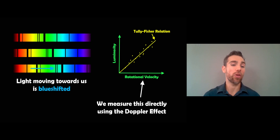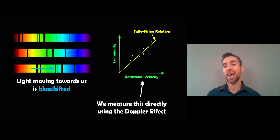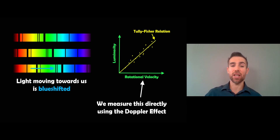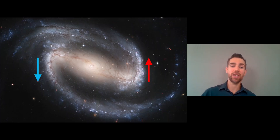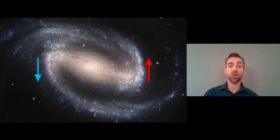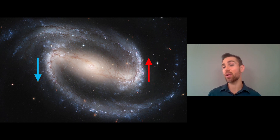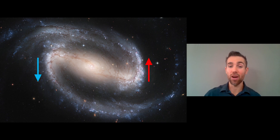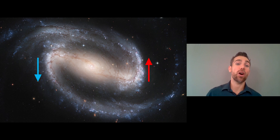We get the same effect on the opposite side of the galaxy — it would be moving towards us slightly and would be blueshifted. From that we can get the full rotation of the galaxy. If we look at this galaxy edge-on, some of it will be rotating towards us (blueshifted on the left) and some moving away from us (redshifted), and from that we get our rotational velocity.